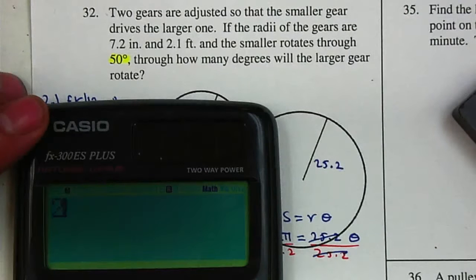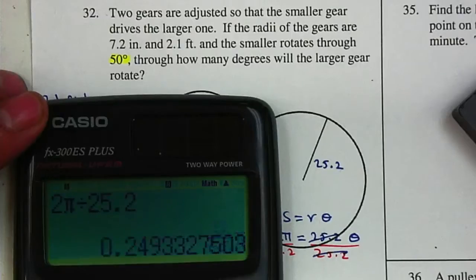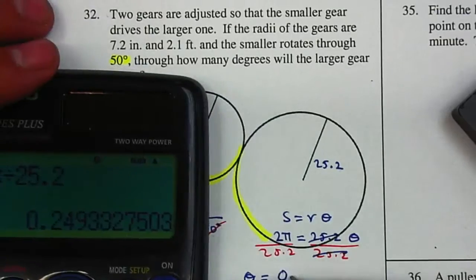So I have 2 multiplied by pi, or 2 pi, and I'm going to divide it by 25.2, which is 0.25.